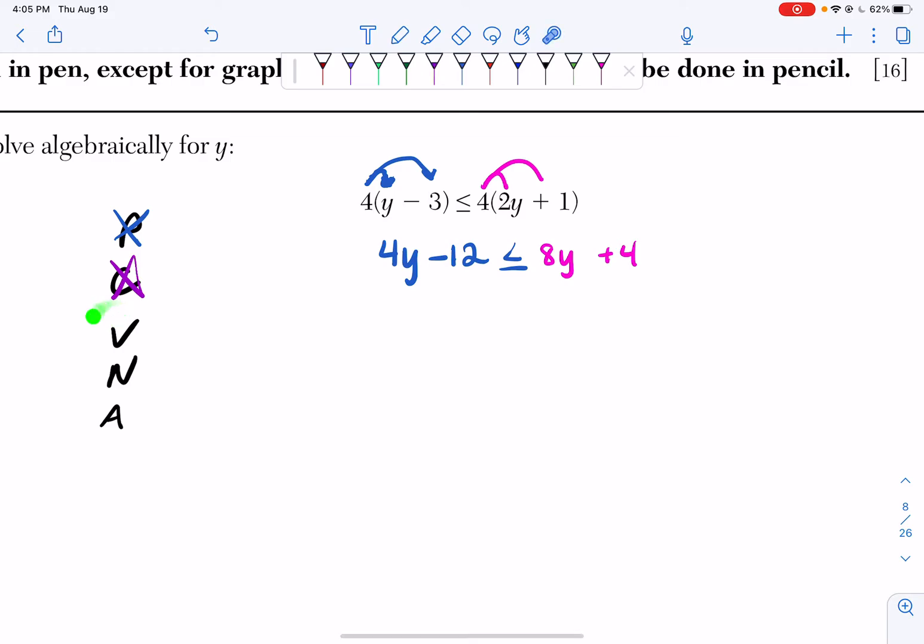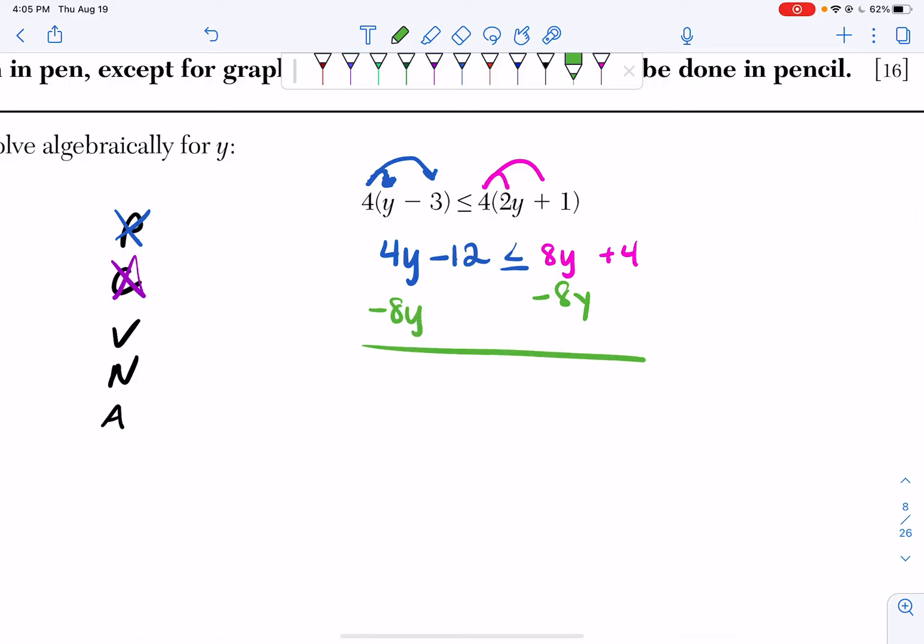Now the V stands for variables on one side. So what I'm going to do is actually move my 4y, and I'm going to show you why. If I move my 8y by subtracting, I get a negative 4y. I don't want to deal with a negative, so I'm just not going to deal with a negative.